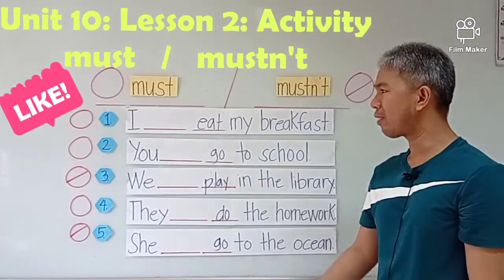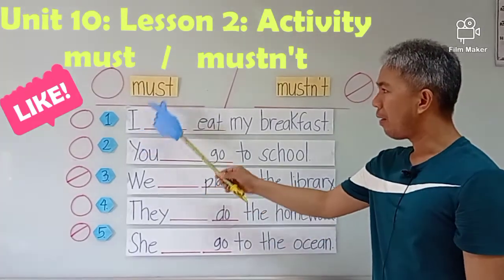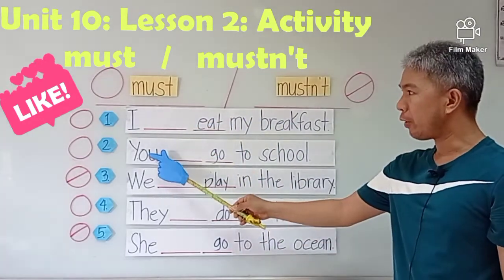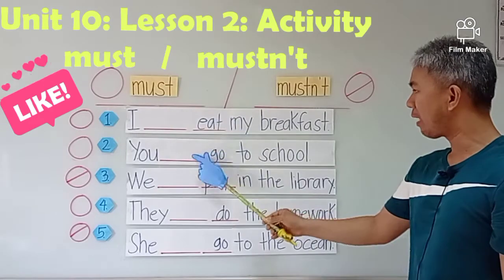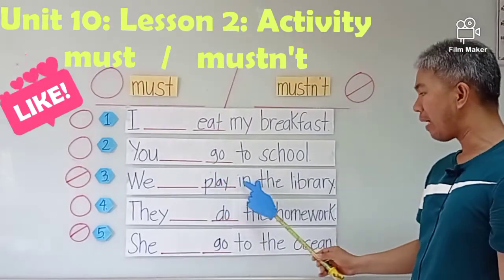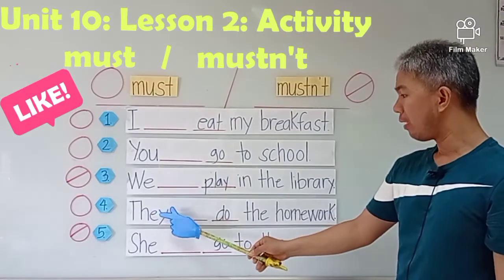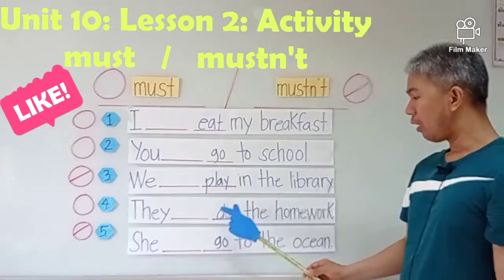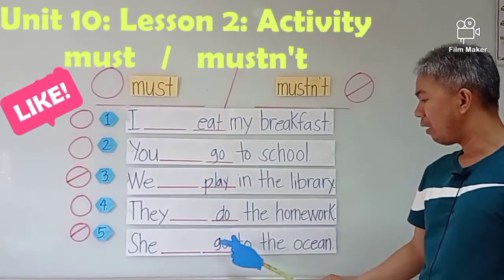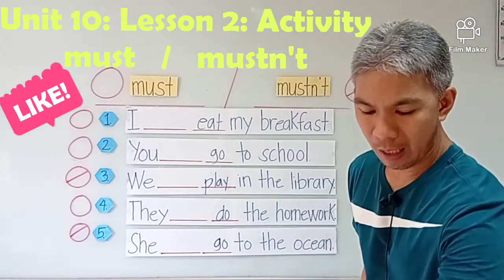Now we are going to answer these questions. Let's read together: Number one — I must or mustn't eat my breakfast. Number two — you must or mustn't go to school. Number three — we must or mustn't play in the library. Number four — they must or mustn't do the homework. Number five — she must or mustn't go to the ocean.